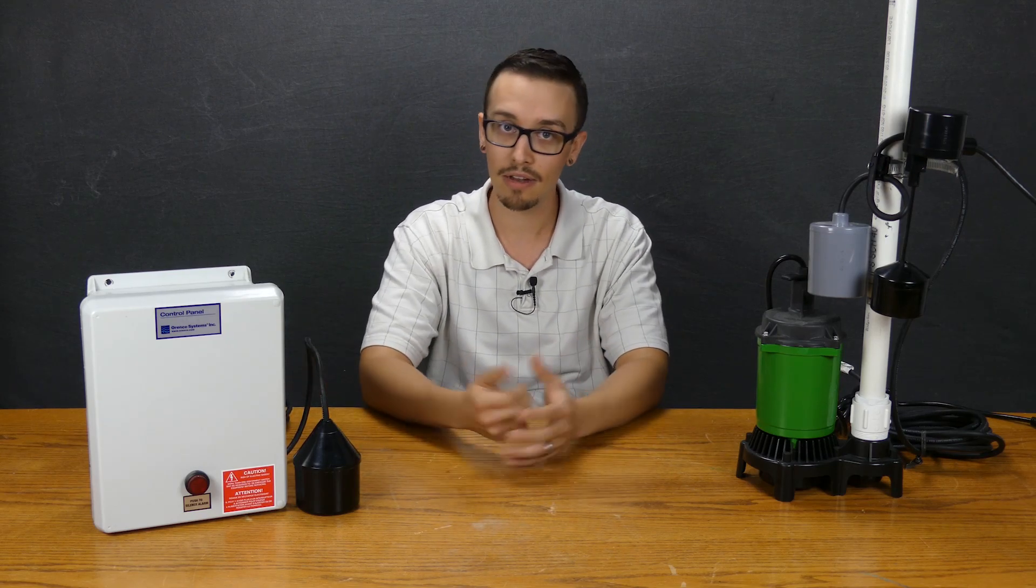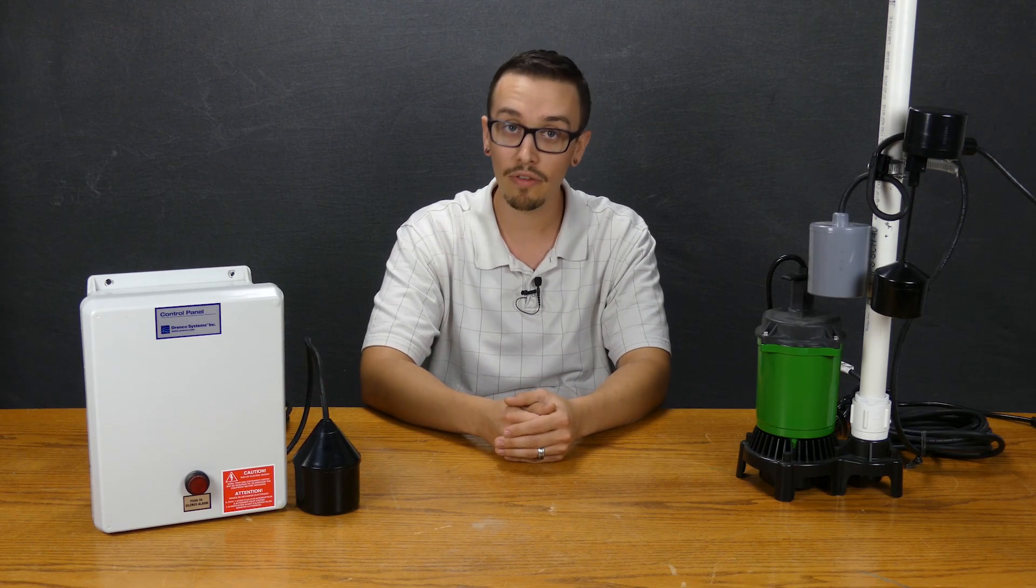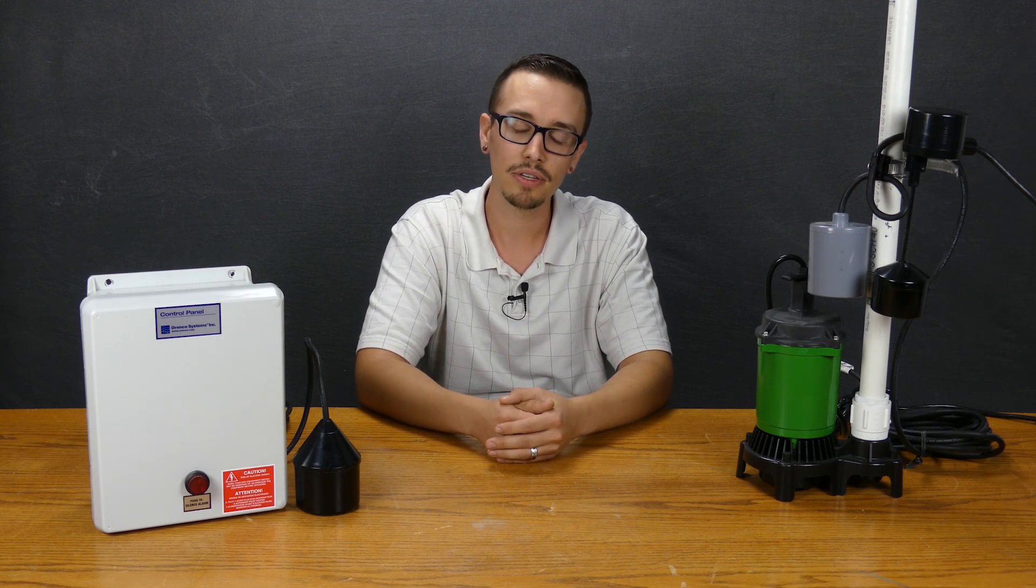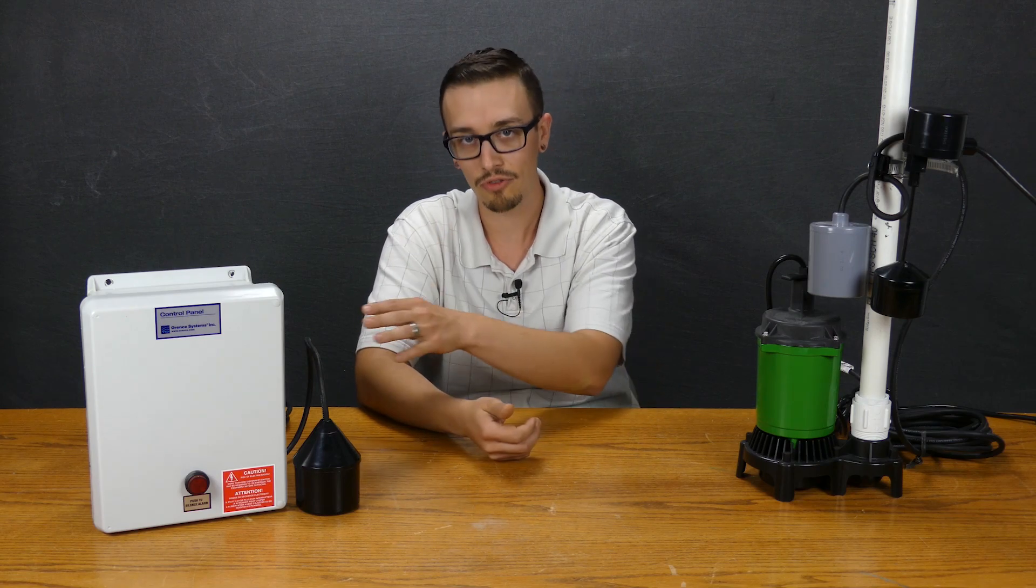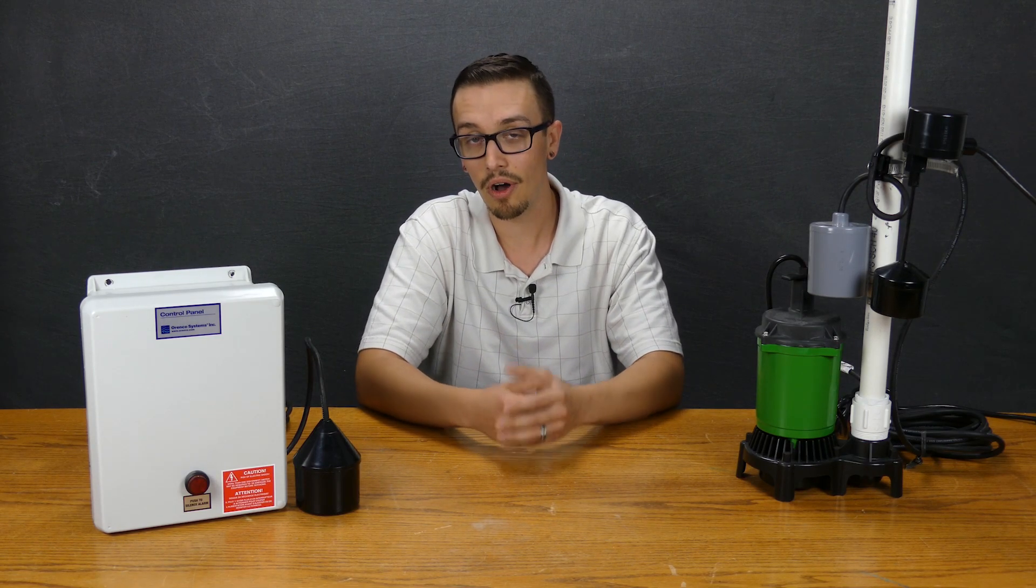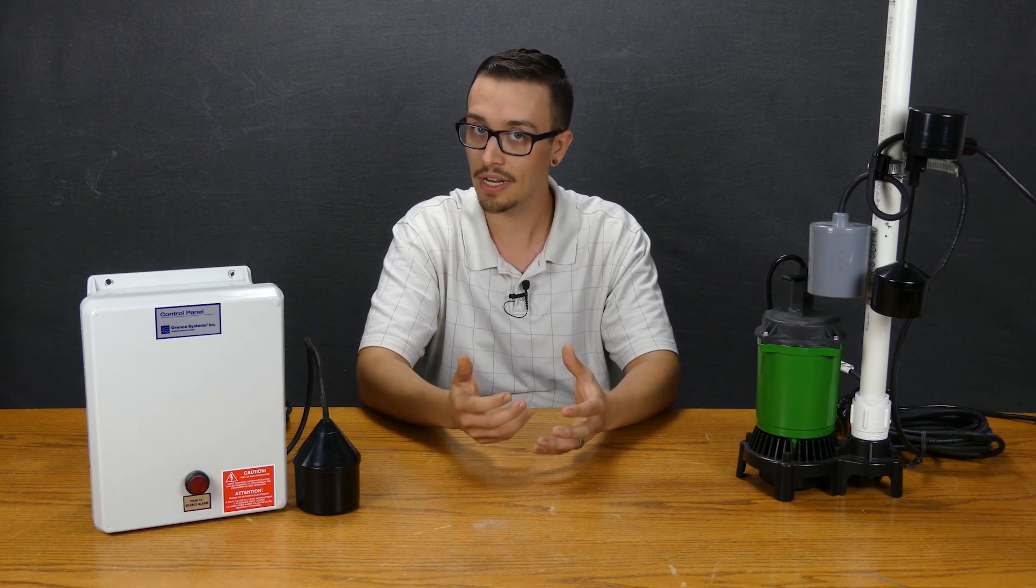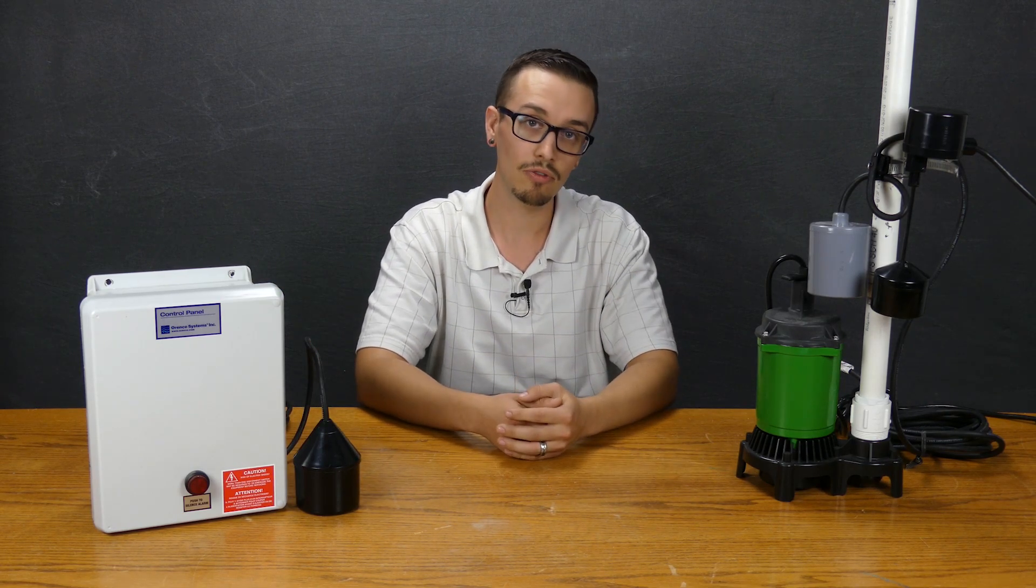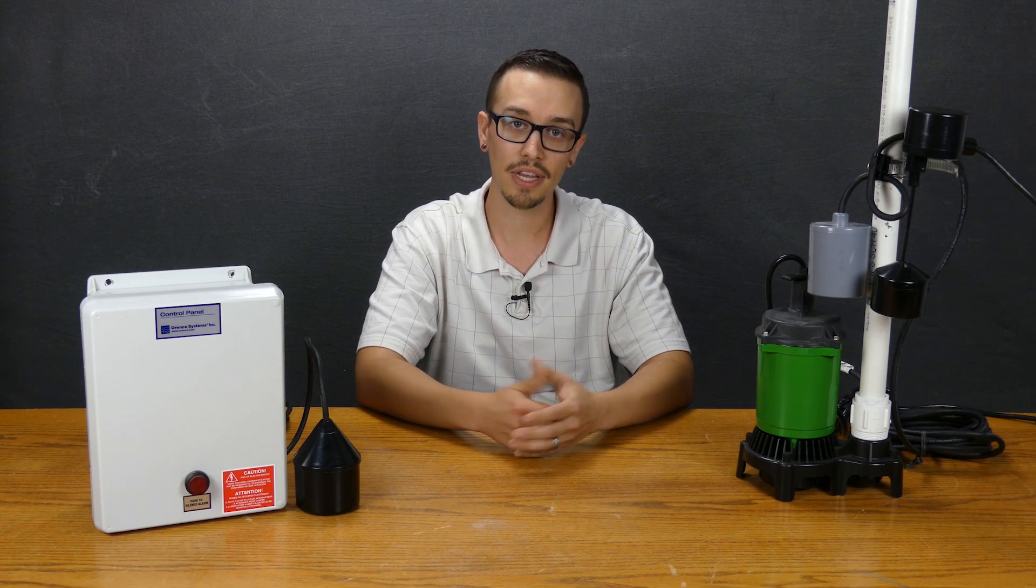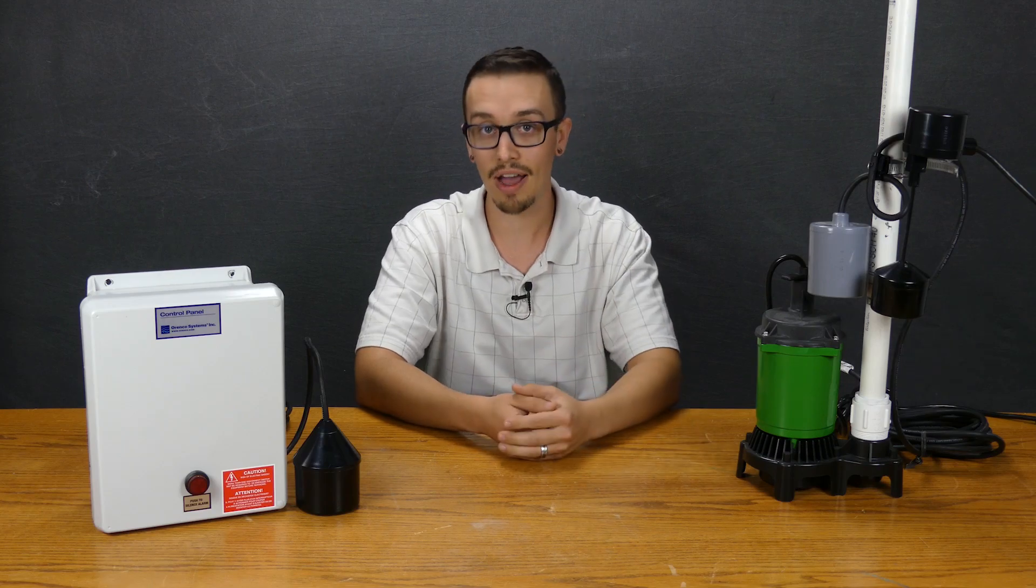So keep that in mind when you're making your selections of a switch. Control switches are generally found in alarm boxes or in systems where you've got a control panel, and then pump switches can basically be found anywhere. And there are even a lot of control panel scenarios, again as I mentioned, that use wide angle floats because they're trying to limit the number of floats in the tank and take advantage of that wide range of travel.